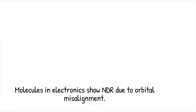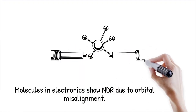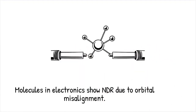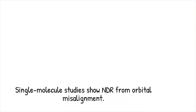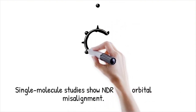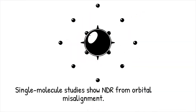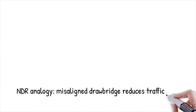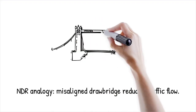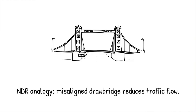In molecular electronics, individual molecules act as electronic components where the alignment of molecular orbitals with electrode energy levels is critical for conduction. When an applied voltage disrupts this delicate alignment, the current can decrease even as the voltage increases, manifesting as NDR. Experiments with single-molecule junctions have demonstrated that as the voltage passes a critical threshold, the misalignment of orbitals leads to a significant drop in conductance. This is like a drawbridge that only permits passage when perfectly aligned — a slight shift in its angle prevents cars from crossing smoothly, reducing the overall flow of traffic.